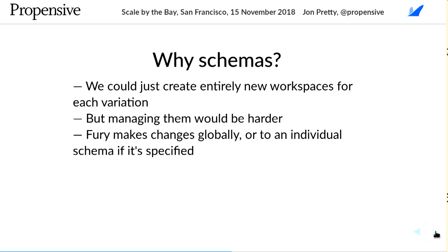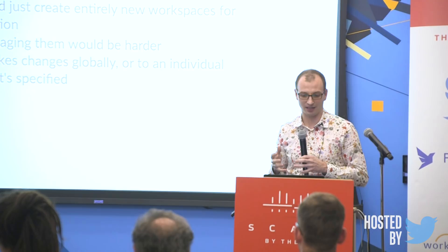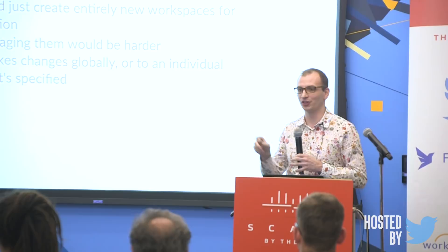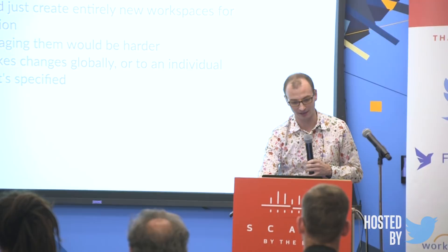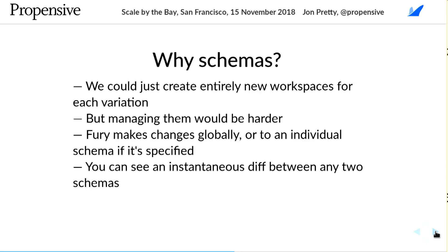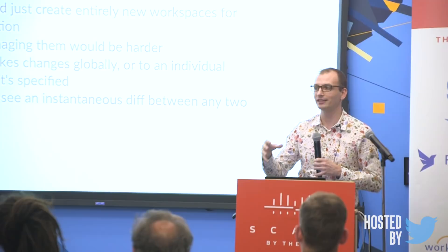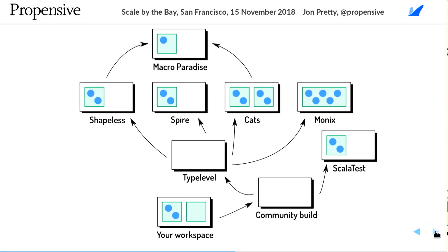The nice thing is that you can change everything if you want — it's not limited to just changing the compiler or magic relating to source directories. It's the entire thing. You can get a nice diff between two schemas: since we're working with data, it's a tree structure, and you can run a command in Fury to get an instantaneous diff of the differences, giving you the information you need to understand what's happening across your schemas.